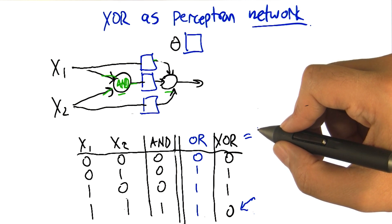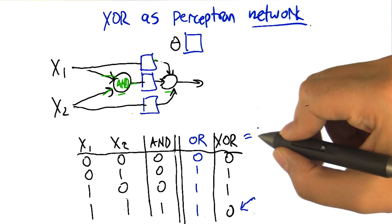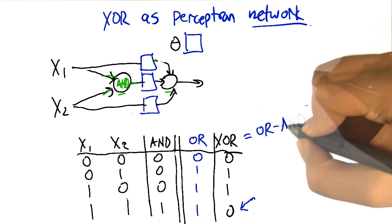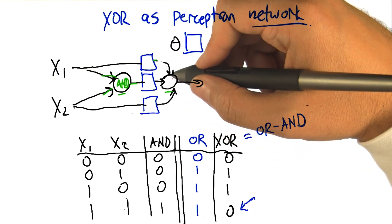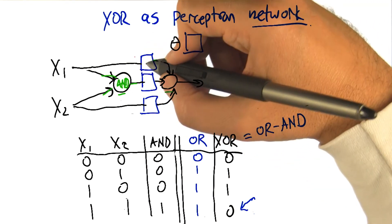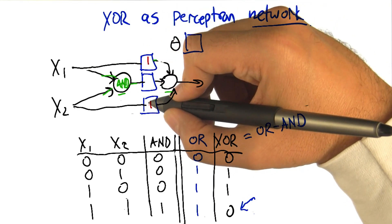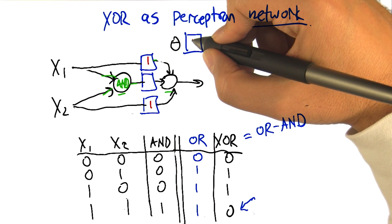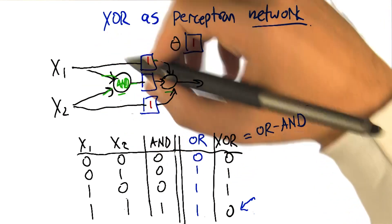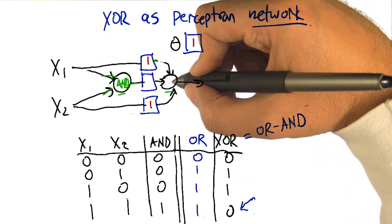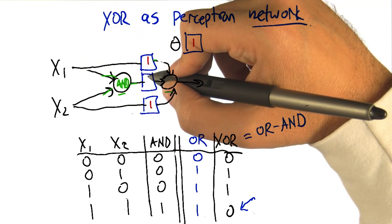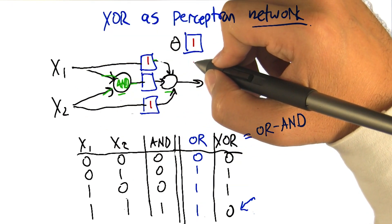We only want to turn off when AND happens to be true. So really what that node is computing is OR minus AND. All right, so how do we make this OR minus AND? The way we did OR before, we gave weights of one on the two inputs and then a threshold of one. And that made this unit now turn on if either x1 or x2 are on, and otherwise it'll stay off.